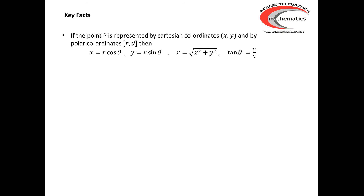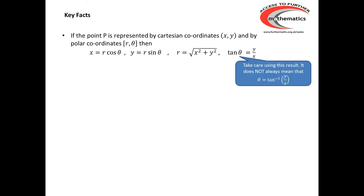If we have a point P represented by Cartesian coordinates (x, y) and also by polar coordinates (r, θ), then we need to know that x = r cos θ, y = r sin θ, and r = √(x² + y²). We also have the relationship that tan θ = y/x, but take care using this result because it does not mean that θ = tan⁻¹(y/x).